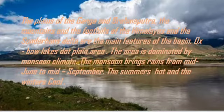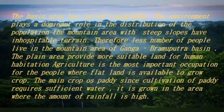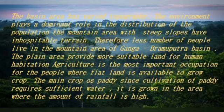The area has a dominant monsoon climate. The monsoon brings rain from mid-June to mid-September. The summers are hot and the winters are cool. The basin area has varied topography. The environment plays a dominant role in the distribution of population; mountain areas with steep slopes have inhospitable terrain. Therefore, fewer people live in the mountain area of the Ganga-Brahmaputra Basin. The plain area provides more suitable land for human habitation. Agriculture is the most important occupation of the people. They mainly grow paddy. Since cultivation of paddy requires sufficient water, it is grown in areas where the amount of rainfall is high.